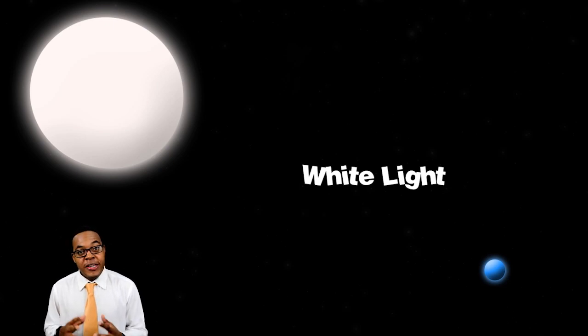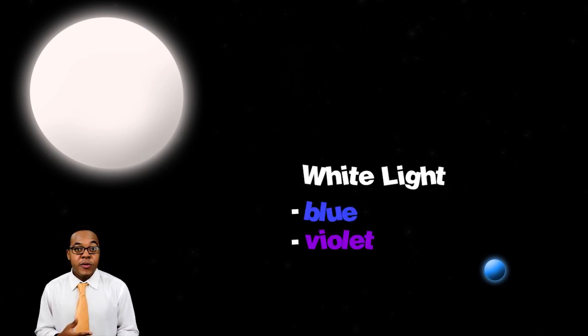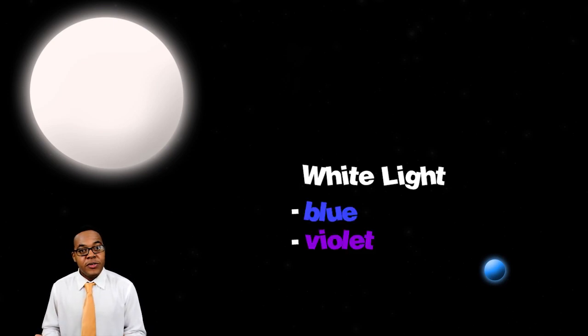Now the Earth's atmosphere, the giant Instagram filter, what it basically does is it's subtracting violet and blue from the white light. And when you subtract those colors from white you get that yellowy orange fireball color that we're used to seeing in our sky.